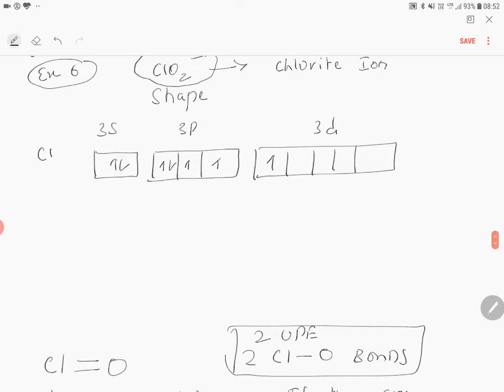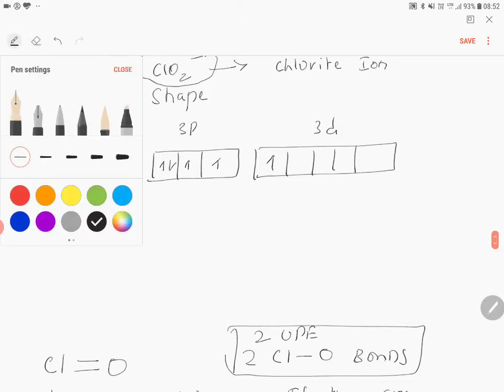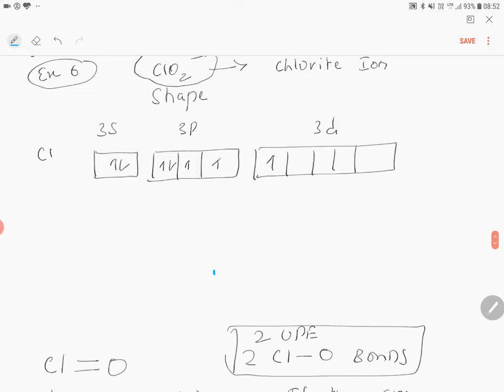So here you can expect first oxygen can have one single bond with your chlorine. So the first oxygen can have one sigma bond with chlorine. Second oxygen also can have one sigma bond with chlorine. So here we have two sigma bonds, two sigma chlorine-oxygen bonds.